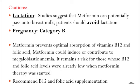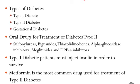Metformin also prevents the optimal absorption of vitamin B12 and folic acid, so patients should monitor their vitamin B12 and folic acid levels. To wrap up the presentation: there are three types of diabetes — type 1, type 2, and gestational. All drugs for treatment of type 2 diabetes include sulfonylureas, biguanides, thiazolidinediones, alpha-glucosidase inhibitors, meglitinides, and DPP-4 inhibitors. Type 1 diabetic patients must inject insulin in order to survive, and metformin is the most common drug used for treatment of type 2 diabetes.